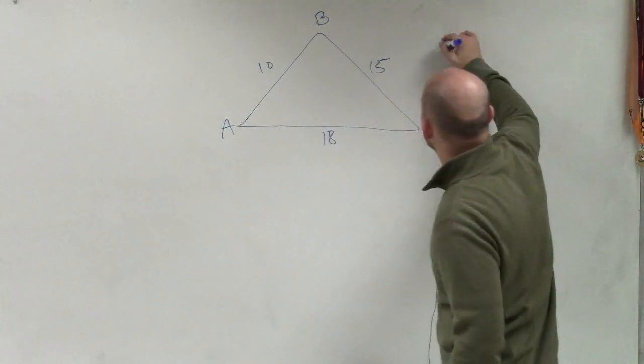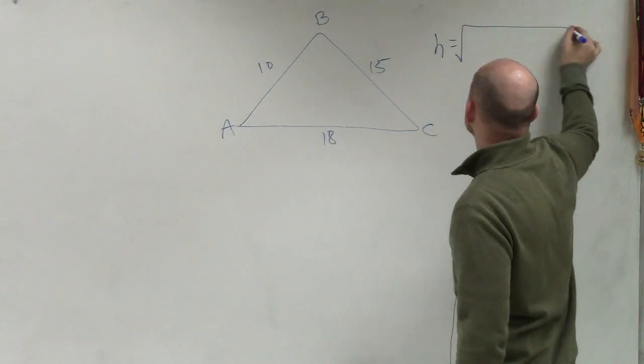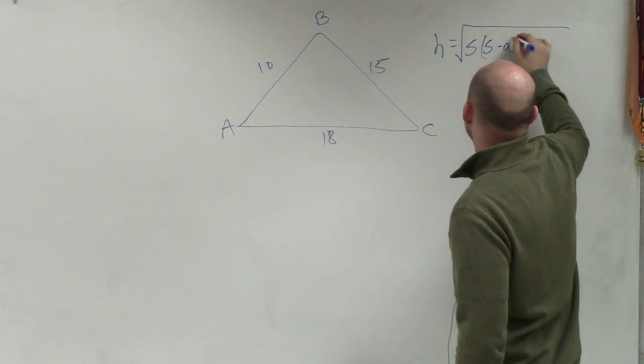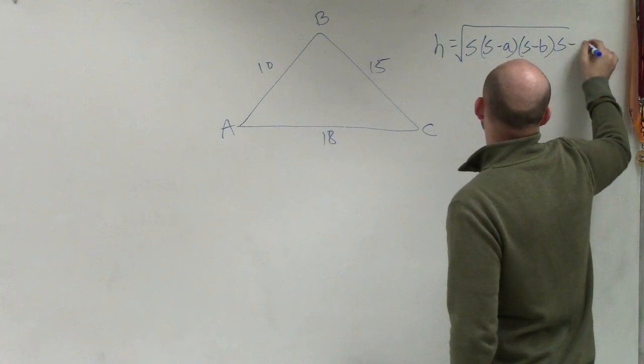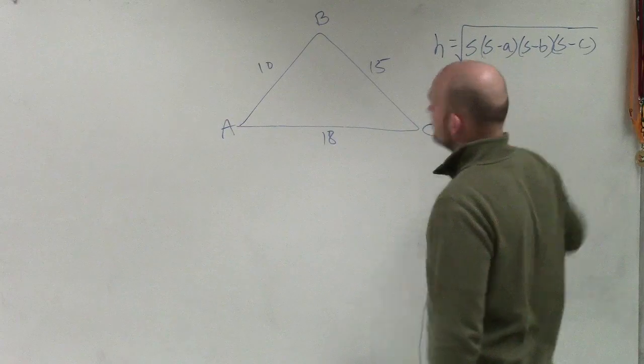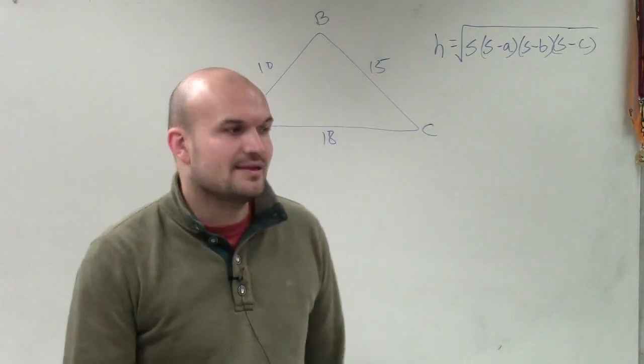which is called Heron's formula, goes like this: A equals the square root of s times (s minus a) times (s minus b) times (s minus c). OK? So this is when you're given all of the side lengths.